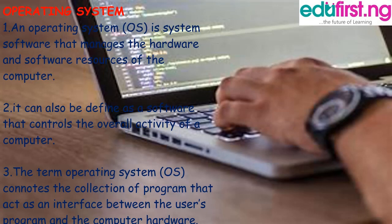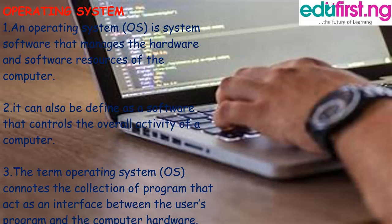Operating system can be defined as a system software that manages the hardware and software resources of the computer. It can also be defined as a software that controls the overall activities of the computer. The term operating system also connotes a collection of programs that acts as an interface between the user program and the computer hardware.